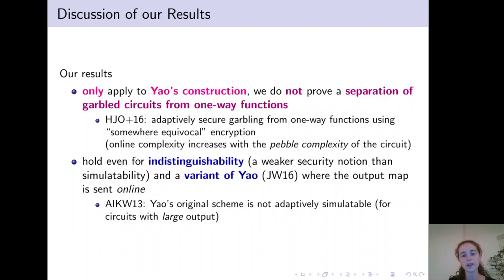And furthermore, we consider a variant of Yao that was introduced by Jafargholi and Wichs, where the output mapping is sent online. Clearly, it is easier to achieve security for this variant of Yao. So again, this makes our lower bound only stronger.